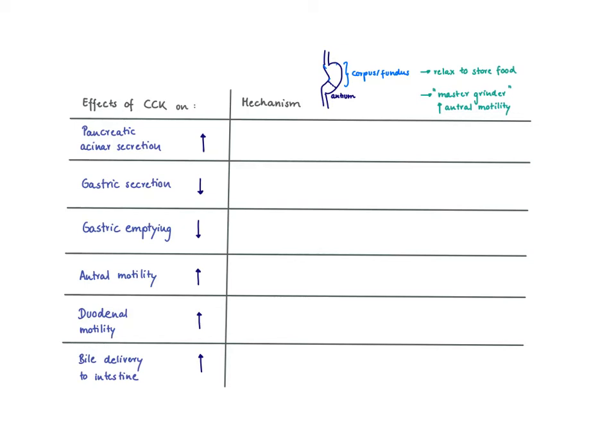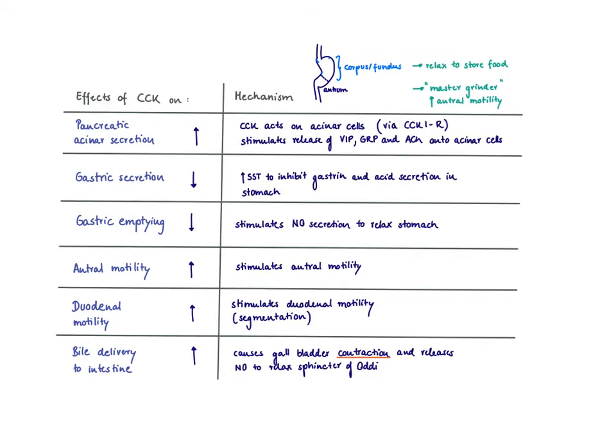So how does CCK trigger all these effects? CCK can directly act on the acinar cells by its CCK receptor to release the digestive enzymes, or it can also stimulate receptors on neurons to trigger an afferent reflex that releases then several peptides or neurotransmitters onto the acinar cells that will also lead to the release of digestive enzymes from the acinar cells.